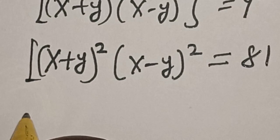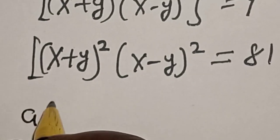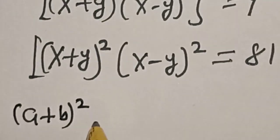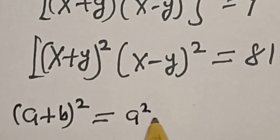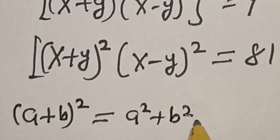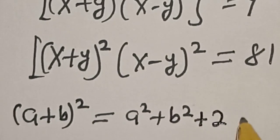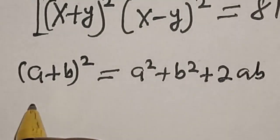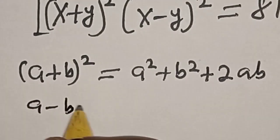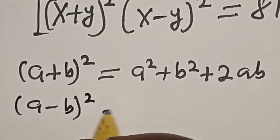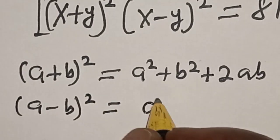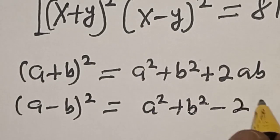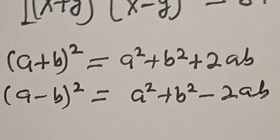Remember this rule: if you have a plus b, squared, this is equal to a squared plus b squared plus 2ab. Then also, if you have a minus b, squared, this is equal to a squared plus b squared minus 2ab. Now let's substitute.